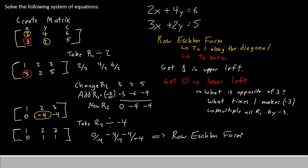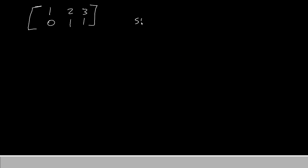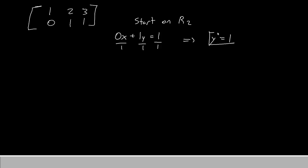Now that we're in row echelon form, solving the matrix won't be too tricky. To solve it, I'm going to start on the lowest row — that's row 2. Row 2 says I have 0x plus 1y equals the constant 1. That's not too tricky to solve — we simply have y equals 1. That's the first piece of our answer. Once we've done row 2, we're going to go up a row to row 1, which says 1x plus 2y equals the constant 3.